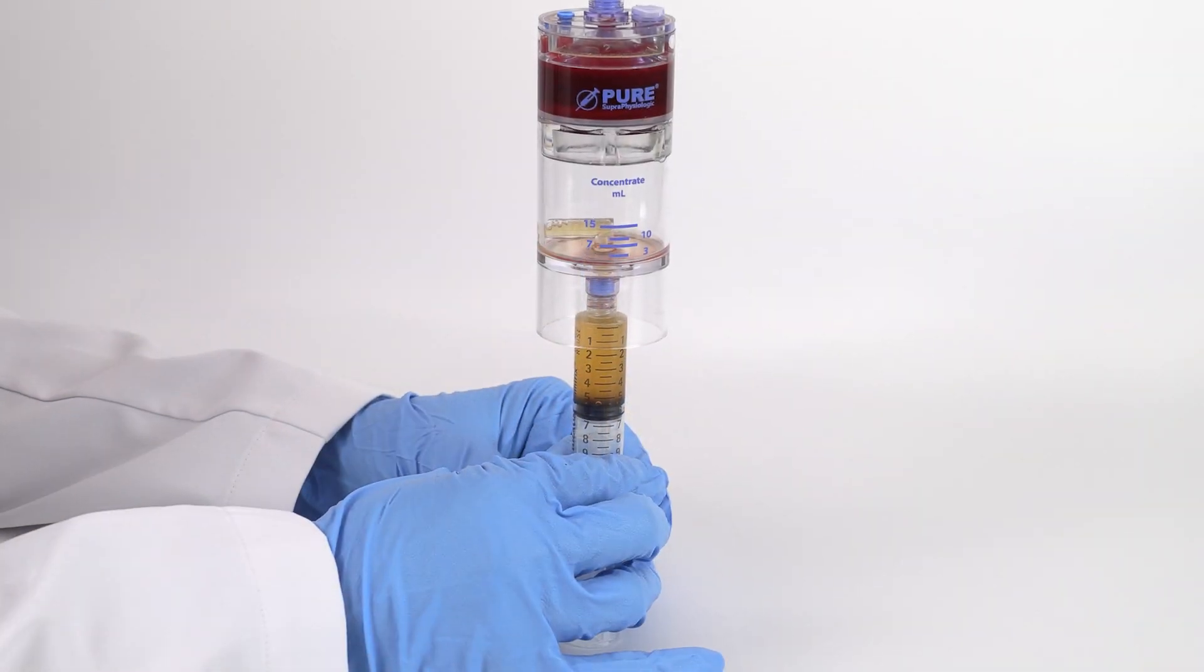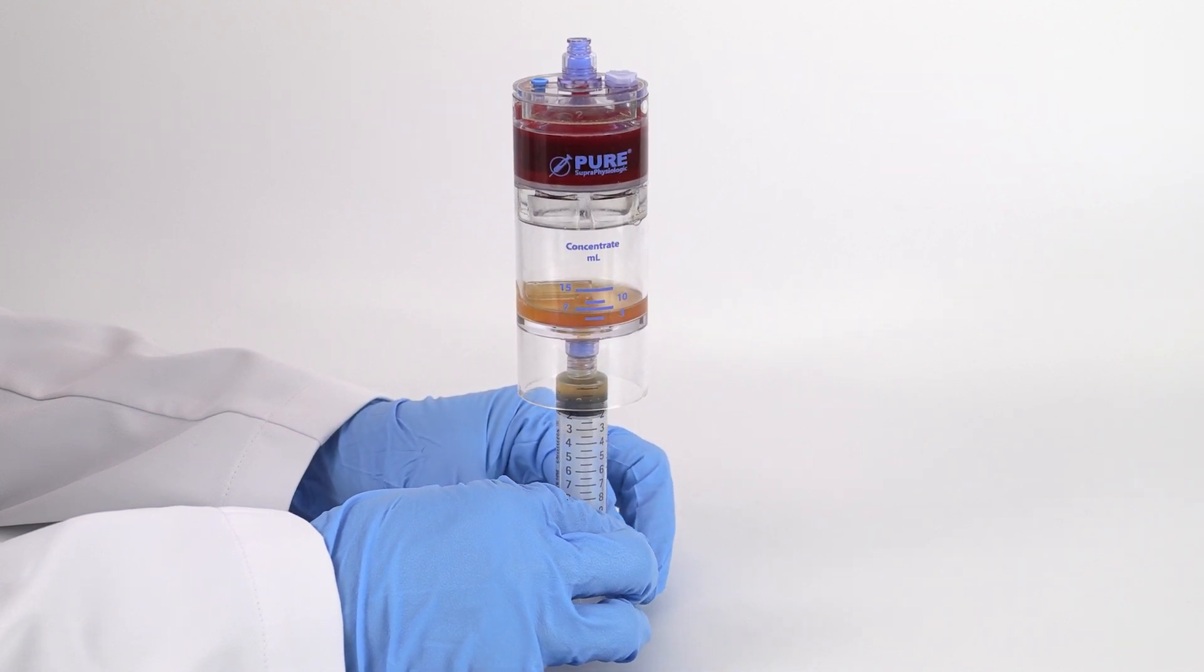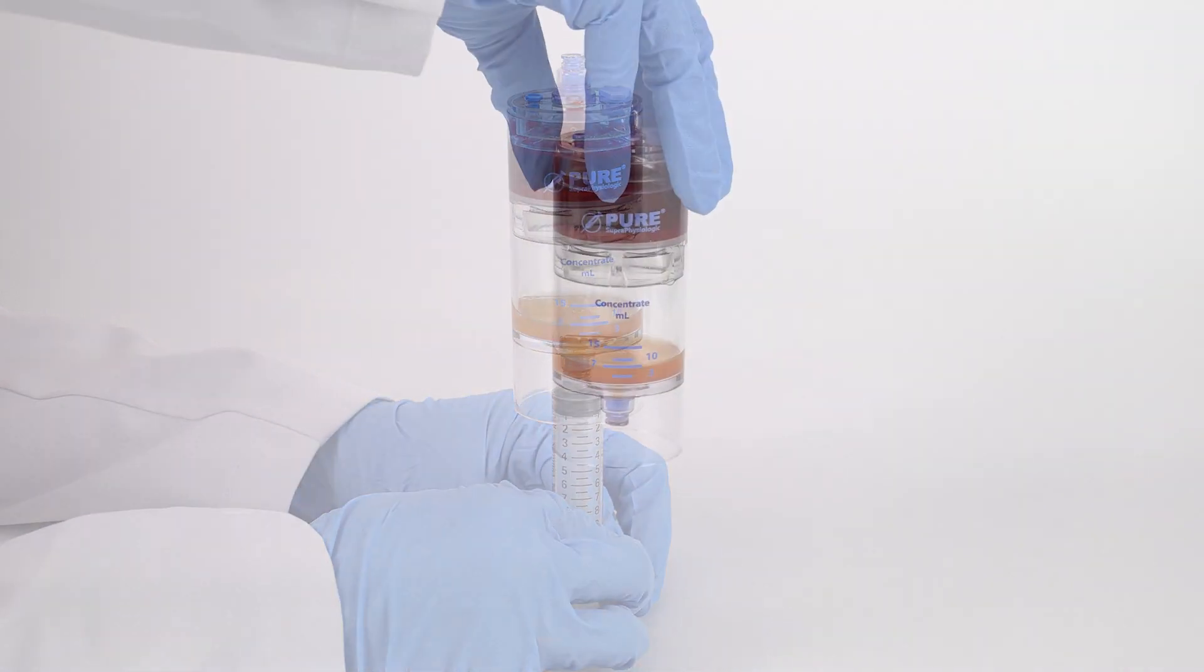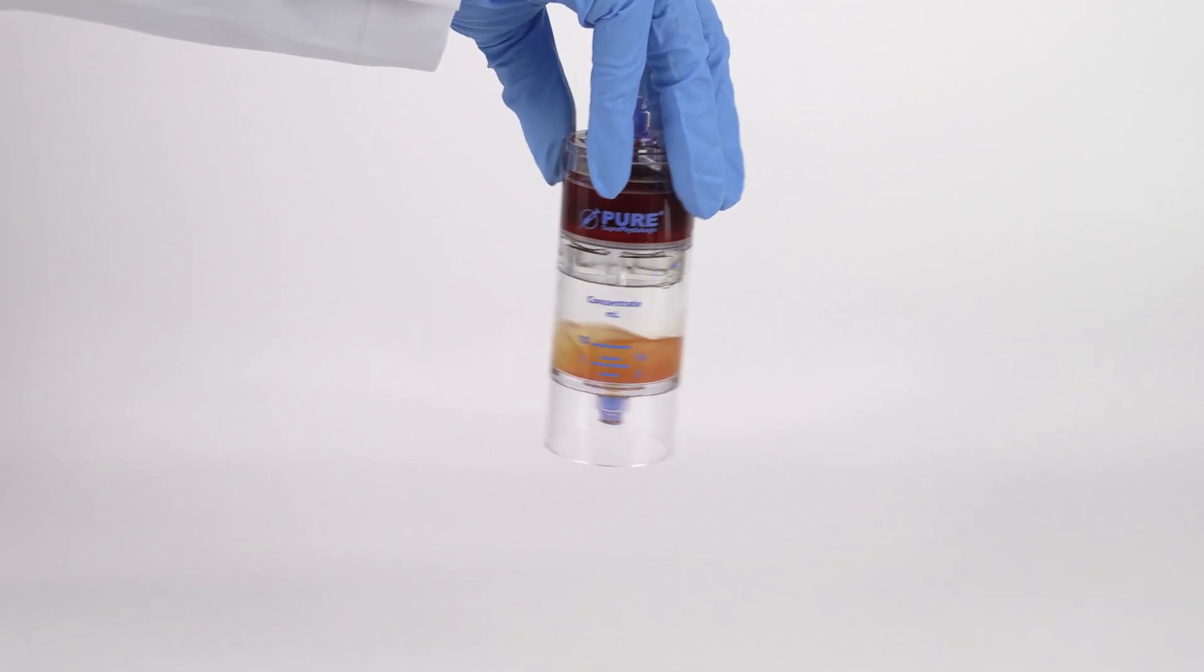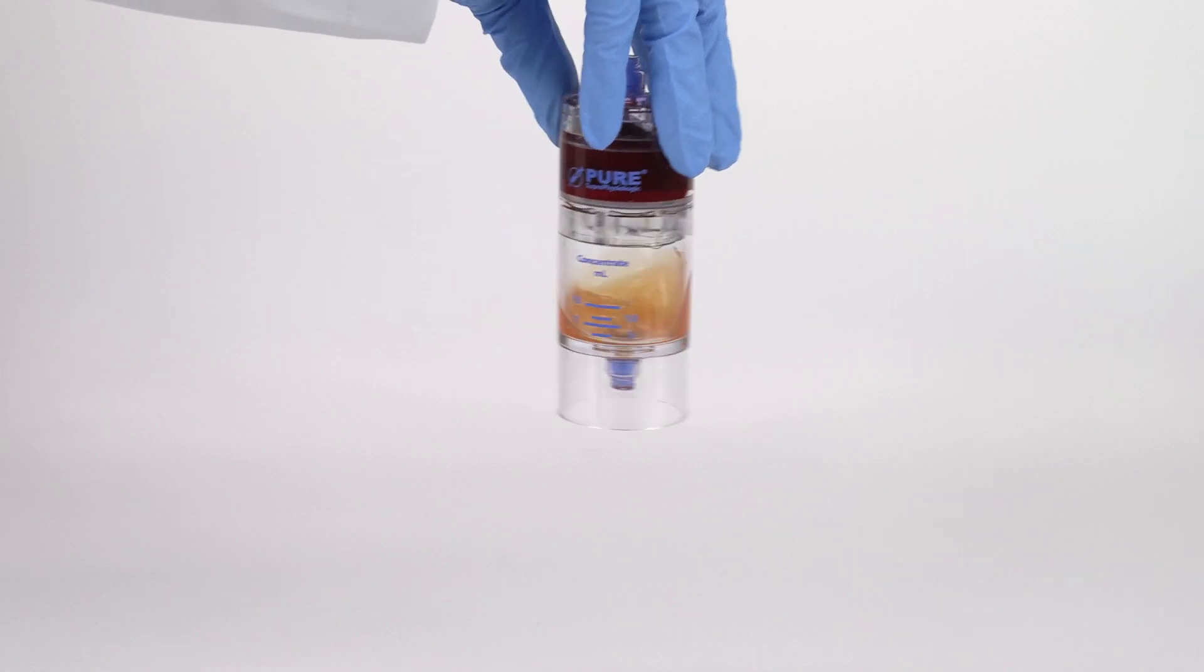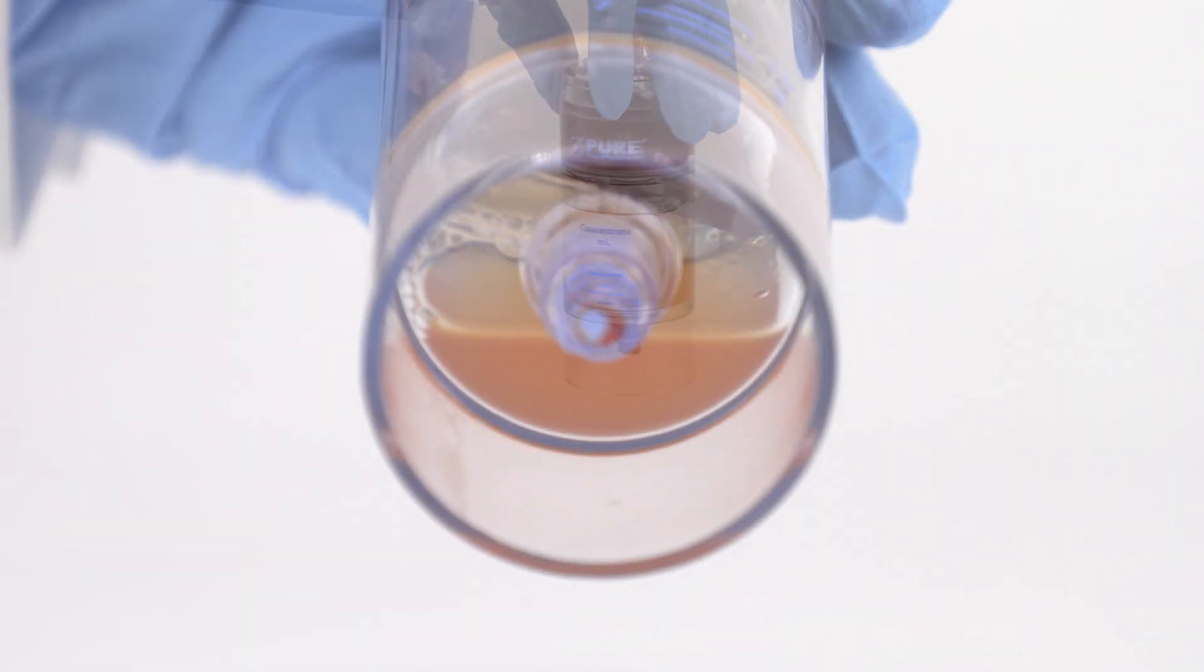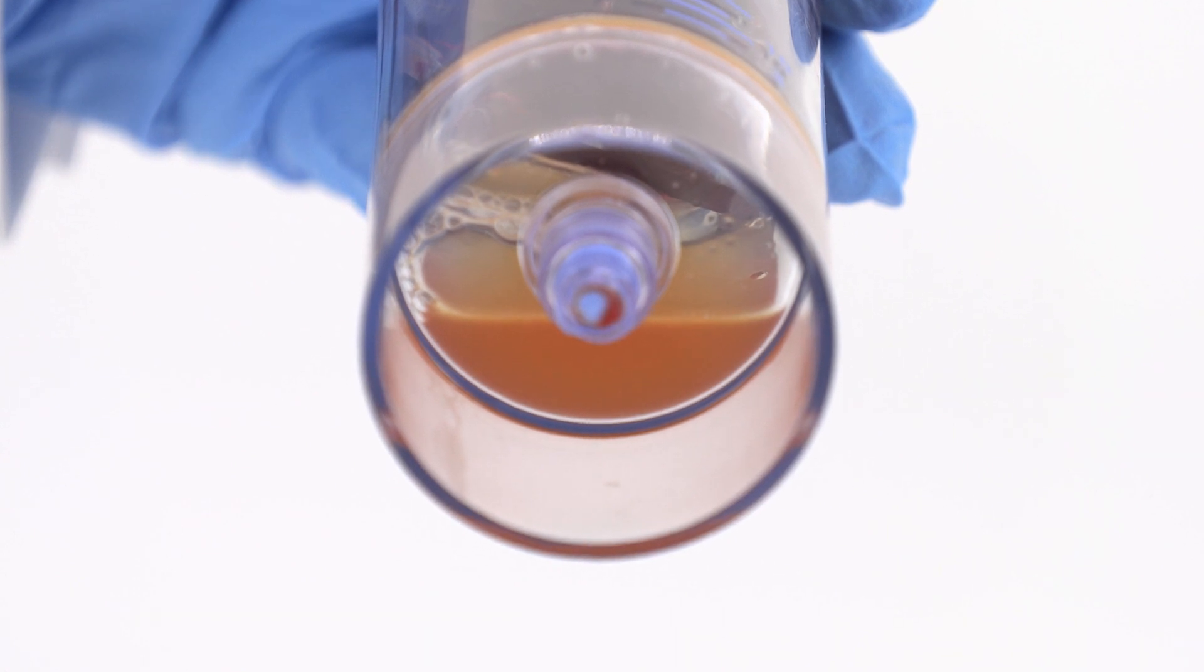Inject the protein-rich plasma into the bottom port of the concentrating device containing the platelet buffy coat. Re-suspend the platelet buffy coat into the protein-rich plasma solution by swirling it back and forth. Do this until the buffy coat is fully re-suspended and is no longer visible at the bottom of the device.